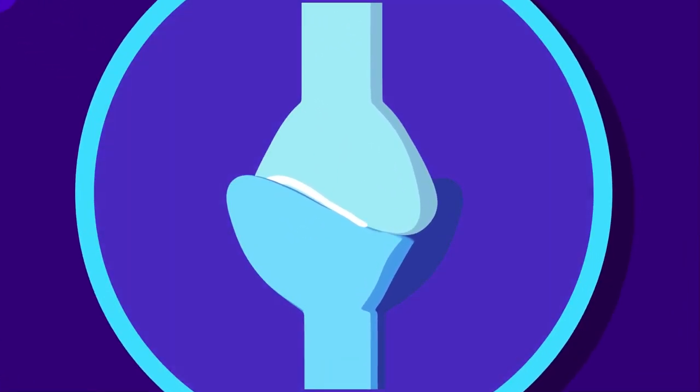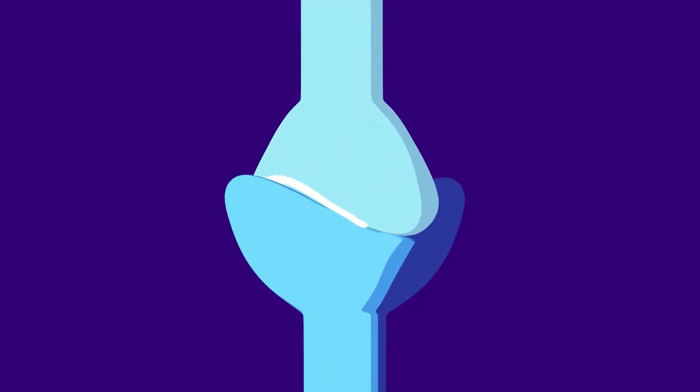Saddle joints. Saddle joints are similar to condyloid joints, but the connecting bones form an interlocking saddle shape, which also limits the rotational motion.